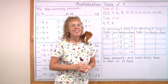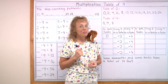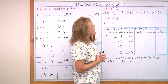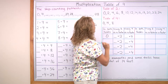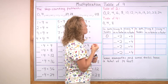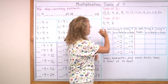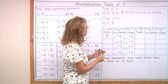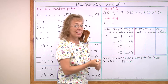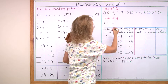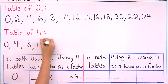We're going to compare the table of 2 and the table of 4. I've already written down the skip counting list for the table of 2, and now we're going to do the same for the table of 4: 0, 4, 8 — and what comes next? Can you tell me the list as I write?